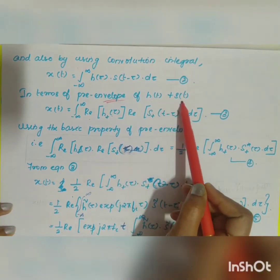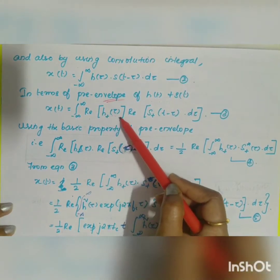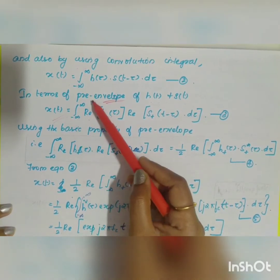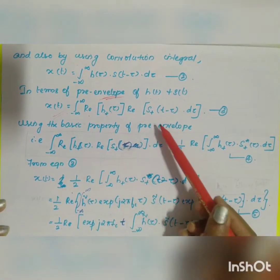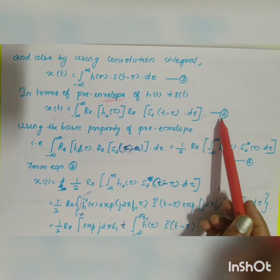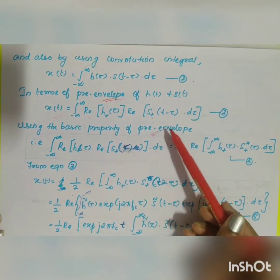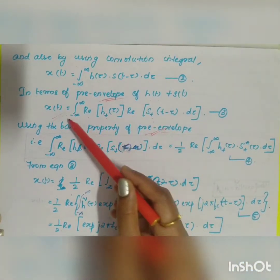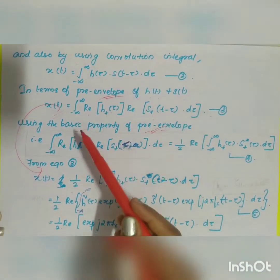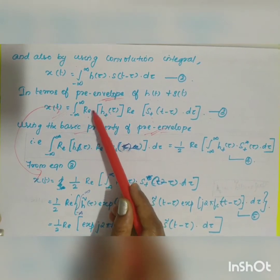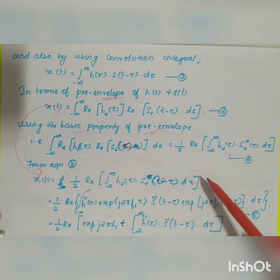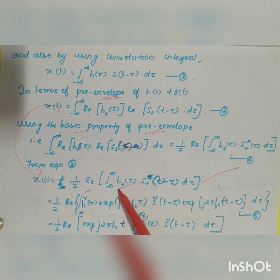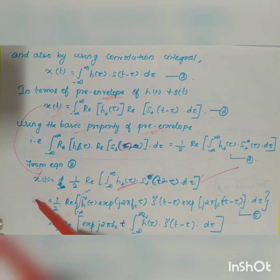This signal x(t) can be written in terms of the pre-envelope of h(t) and s(t). Therefore the output x(t) can be written as: ∫ from −∞ to ∞ of Re[h+(τ)] · Re[s+(t−τ)] dτ — Equation 3. Using the basic property of pre-envelopes, Equation 3 can be rewritten as: (1/2) · Re{ ∫ from −∞ to ∞ of h+(τ) · s+(t−τ) dτ }.